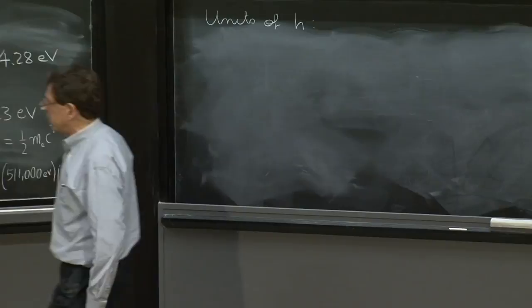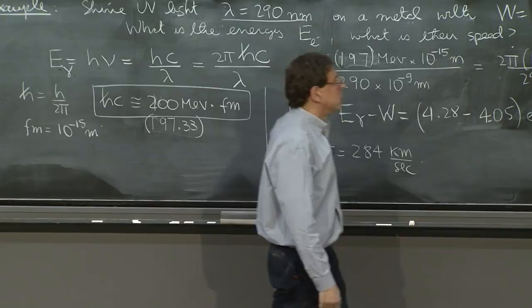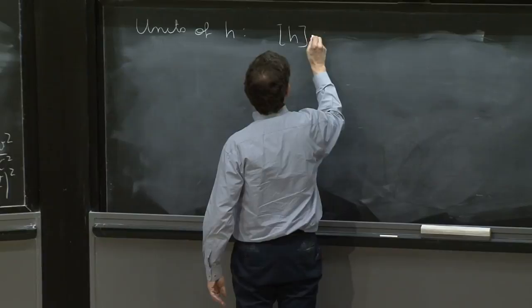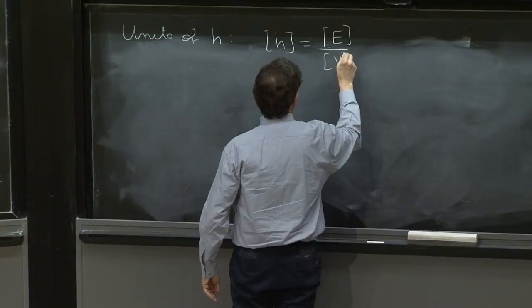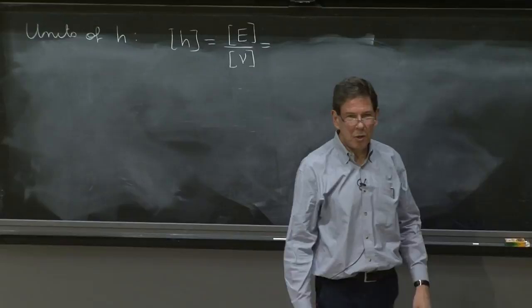So if you have a quantity that appears for the first time, and as it appears here, E equal h nu, this is a good place to understand the units of h, because the units of h would be units of energy divided by units of frequency. And I put these square brackets to denote units.